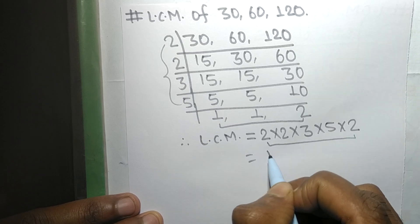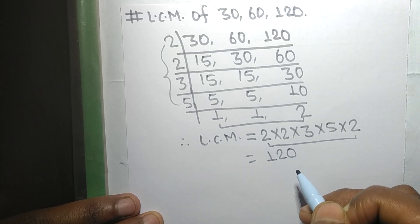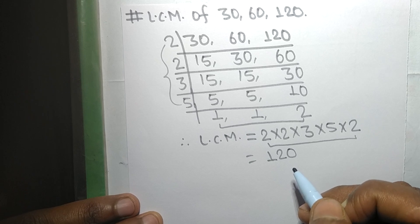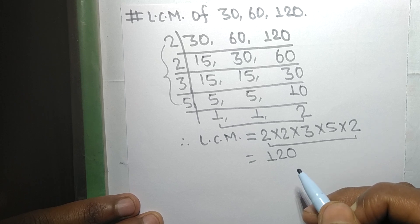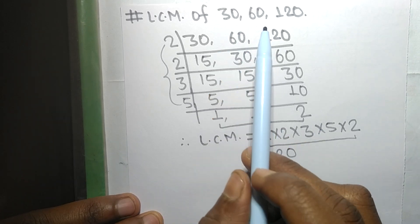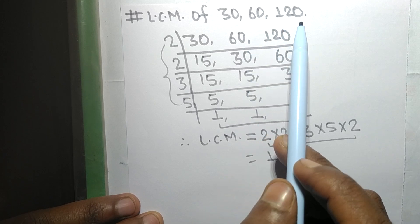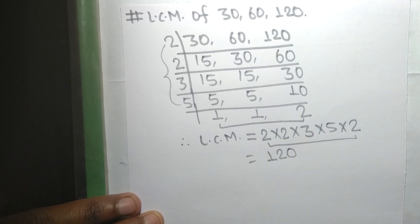So 120 is the LCM of 30, 60, and 120. This much for today, and thanks for watching.